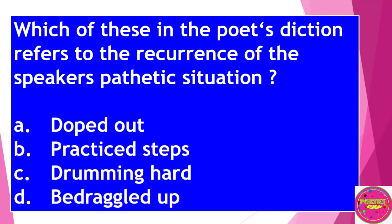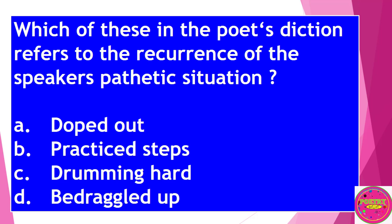Which of these in the poem's diction refers to the recurrence of the speaker's pathetic situation? A. Doped out. B. Practice steps. C. Drumming hard. D. Bedraggled up. The correct answer to this question is B — Practice steps.